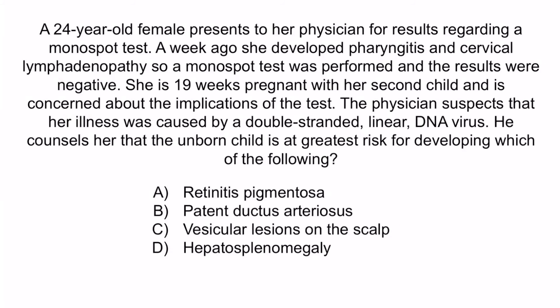Let's review with a question. A 24-year-old female presents for results of a monospot test. A week ago she developed pharyngitis and cervical lymphadenopathy; the monospot test was negative. She is 19 weeks pregnant and the physician suspects her illness was caused by a double-stranded linear DNA virus. The unborn child is at greatest risk for developing which of the following: A. Retinitis pigmentosa, B. Patent ductus arteriosus, C. Vesicular lesions on the scalp, or D. Hepatosplenomegaly? The negative monospot test plus pharyngitis and cervical lymphadenopathy should make you think of CMV. Being 19 weeks pregnant puts the unborn child at risk for congenital CMV, and the only listed clinical feature of congenital CMV is D, hepatosplenomegaly.